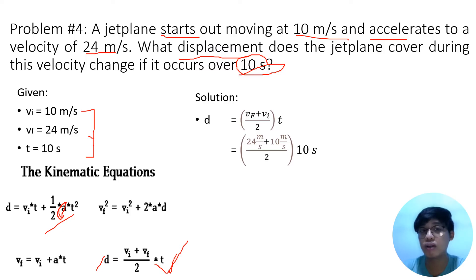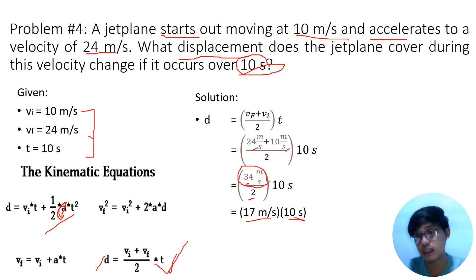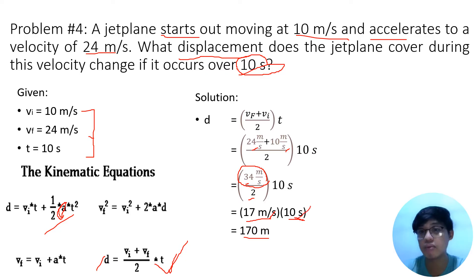We'll use the formula: distance equals final velocity plus initial velocity divided by 2, multiplied by time. Substituting the values: (24 + 10) / 2 × 10. Adding 24 plus 10 gives 34 meters per second. Dividing 34 by 2 gives 17 meters per second. Multiplying 17 by 10 gives 170 meters. The seconds cancel out, leaving meters as the unit — which is correct for displacement.